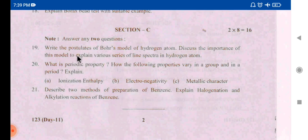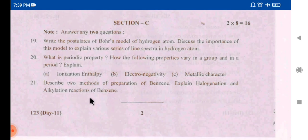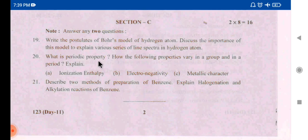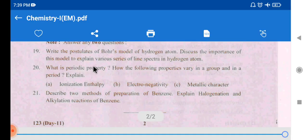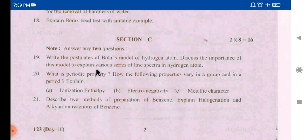Section C: use Bohr's model and the hydrogen spectrum — it is a periodic property. The 21st question is: describe two methods of preparation of benzene, explain halogenation and alkylation reactions of benzene — two methods available. You now have 8 marks. You have two previous papers; compare with the model papers to understand the question paper pattern and depth of formation.